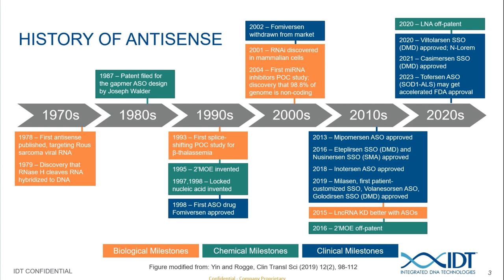In the early 2000s, RNAi was discovered in mammalian cells, providing a competing knockdown technology. Along with the ASO drug being withdrawn from the market, we saw a decline in interest in antisense oligos. This changed in the 2010s with FDA approvals of both splice-shifting oligos and gapmer antisense oligos, and key modifications such as the 2'-MOE and locked nucleic acid went off patent in 2020. In the 2020s, there has been an uptick in FDA-approved ASOs, and personalized medicine using ASOs is gaining traction, especially for ultra-rare diseases.